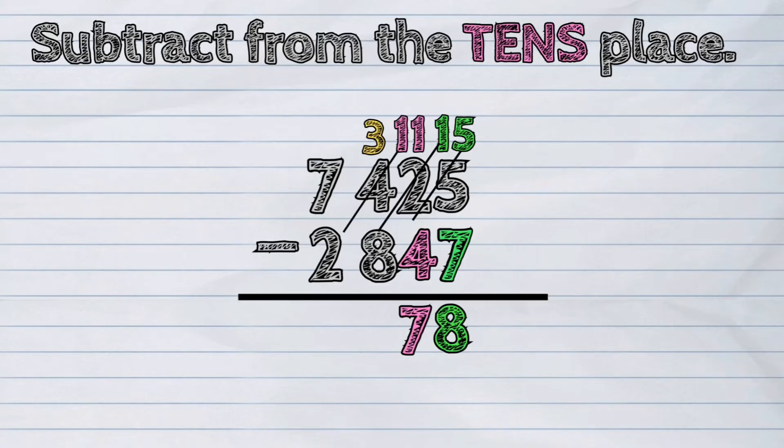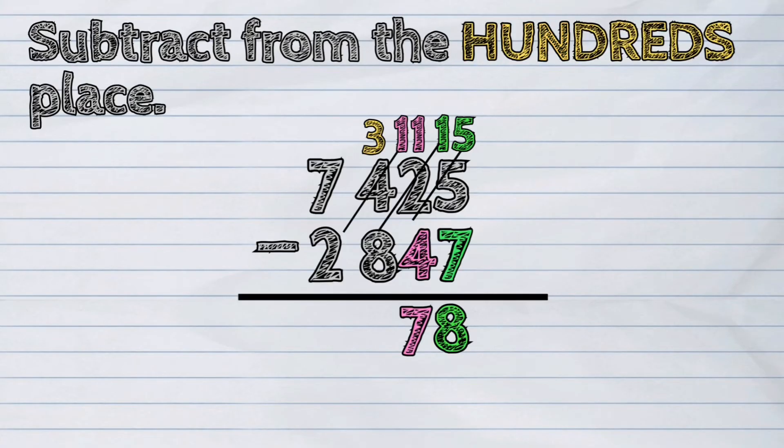Let's proceed to the hundreds place. Three hundreds minus eight hundreds. Because the minuend is not enough again, we will regroup or borrow from the thousands place.